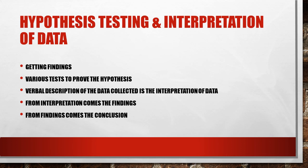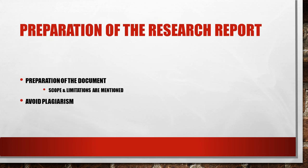From the interpretation, the researcher gets the findings of the study, and from the findings is able to derive the conclusion of the research study. The final step in the research process is preparation of the research report — the entire document including all steps from the theoretical background of the research problem, to the research design, sample design, data collected, analyzed, and interpreted. At the end, after the conclusion, the scope of the study and the limitations of the study are also mentioned.